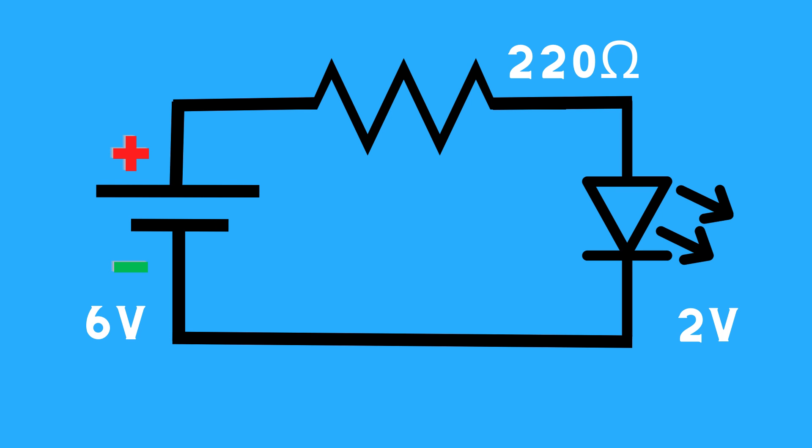The setup will look something like this schematic diagram. There will be a 6-volt battery as the power source, a 2-volt LED to verify if the battery is working, and a 220-ohm resistor for the voltage drop.